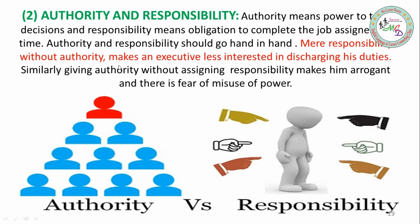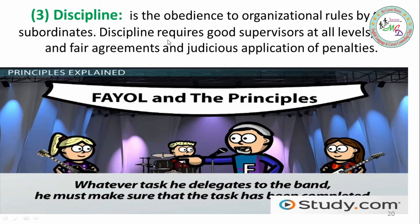Authority and responsibility should go hand in hand - both should be together. If you give someone mere responsibility without authority, they cannot complete the work on time. Both must be balanced. If you give only responsibility without authority, the executive becomes less interested in discharging duties. Similarly, giving authority without responsibility makes a person arrogant with the fear of misuse of power. Next is Discipline - it is necessary everywhere: at home, school, college, and organizations. Discipline requires obedience to organizational rules by subordinates, good superiors at all levels, clear and fair agreements, and application of penalties when rules are broken.